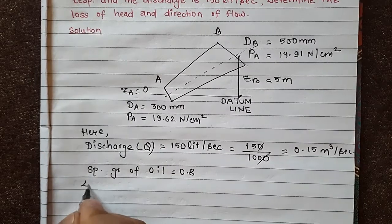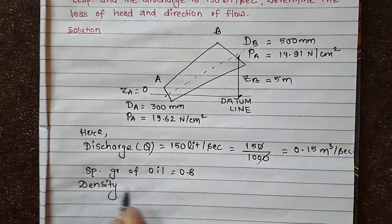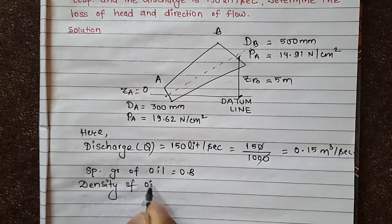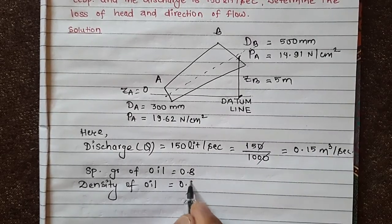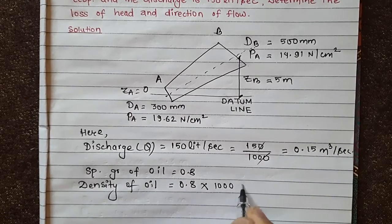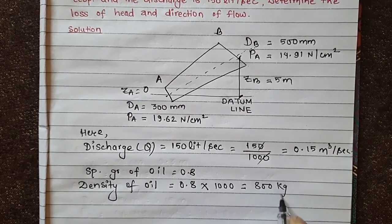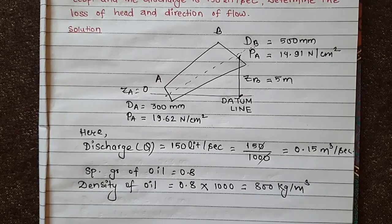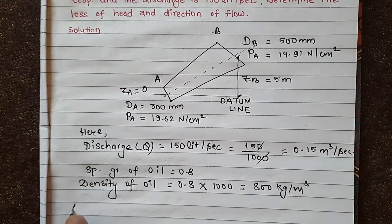Therefore, density of oil = 0.8 × 1000 = 800 kg per meter cube.